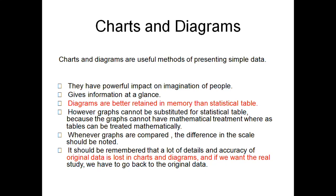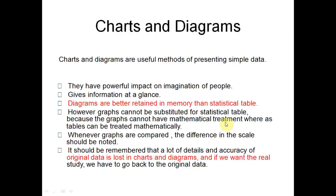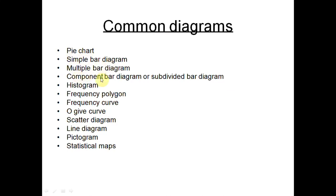Charts are used for qualitative data while histograms are for quantitative data. Charts and diagrams are important because they give information at a glance, have a powerful impact on imagination, and are better retained in memory than a table. However, some original data may be lost when preparing charts. Common diagrams include pie charts, simple, multiple, and component bar graphs, histogram, frequency curve, Ogive curve, scatter diagram, line diagram, and pictogram.